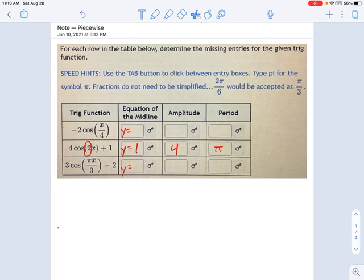Now, in the next one, what do I want to do next? Let's pick on this guy: negative 2 cosine x over 4. Well, there's no plus anything at the end of it, so there's no midline. And you would just say midline equals 0, or y equals 0 is the equation of the midline.